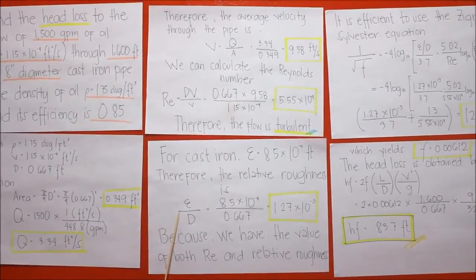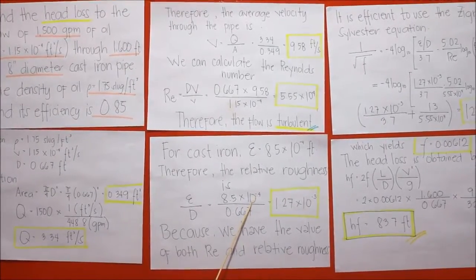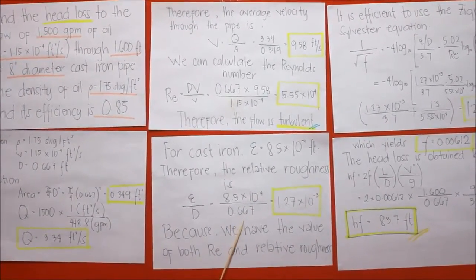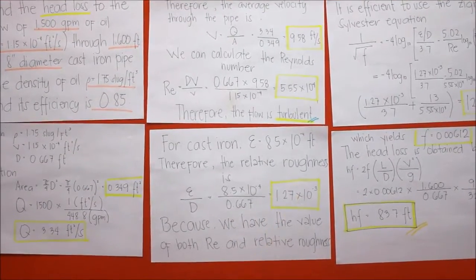The efficiency is equal to 8.5 times 10 to the power of negative 4 over a diameter of 0.667. We have 1.27 times 10 to the power of negative 3.